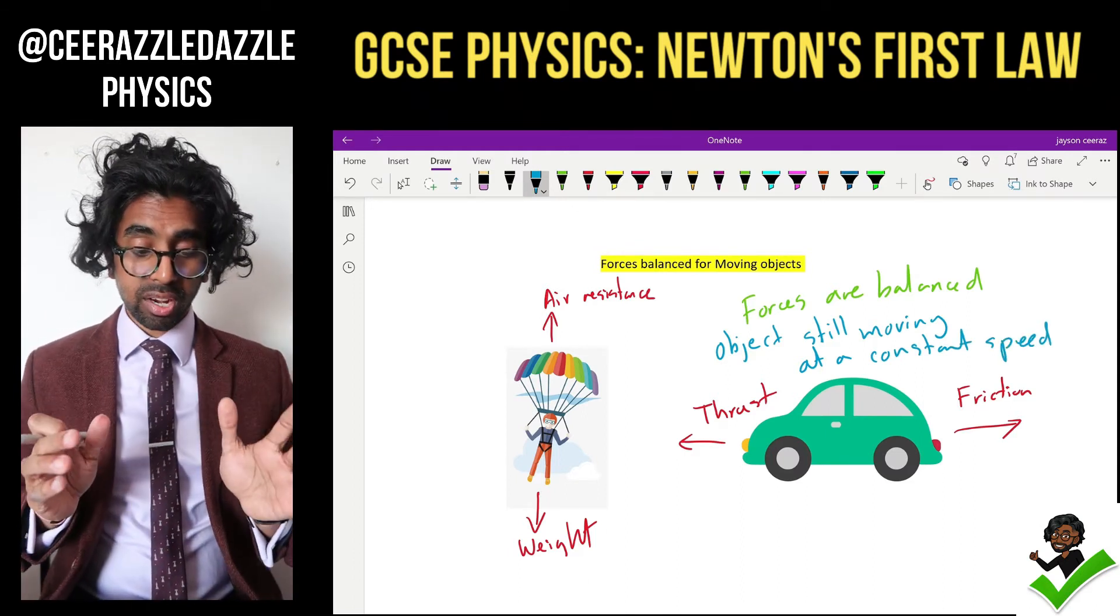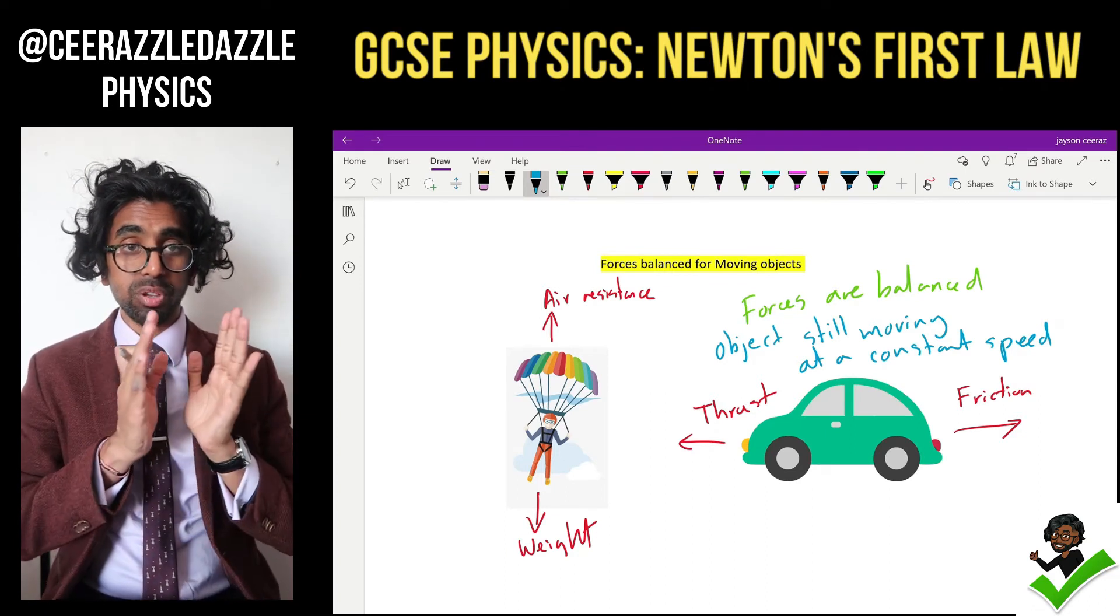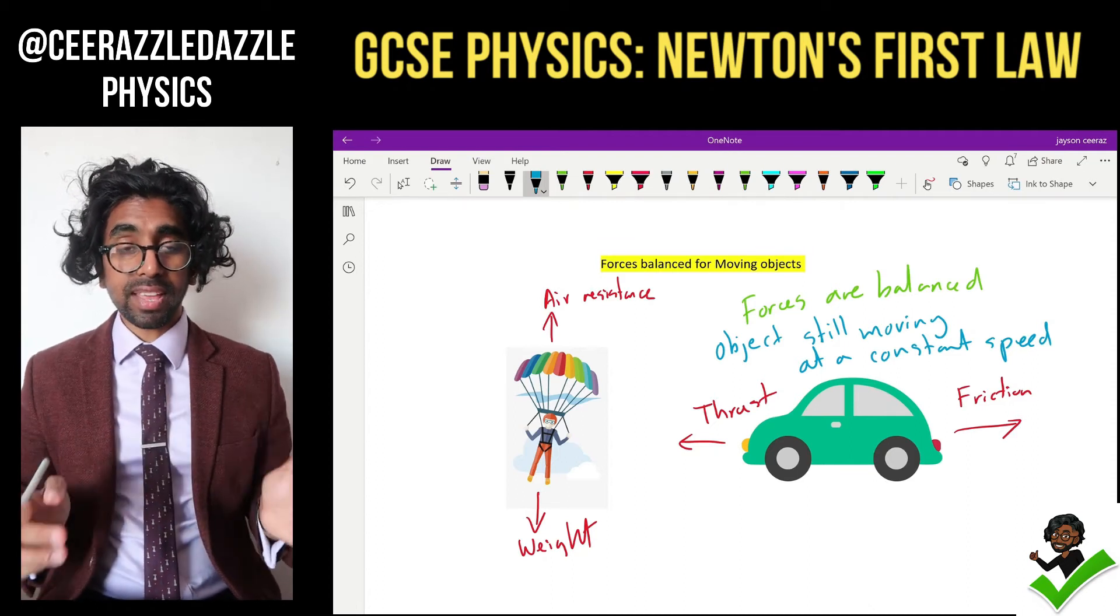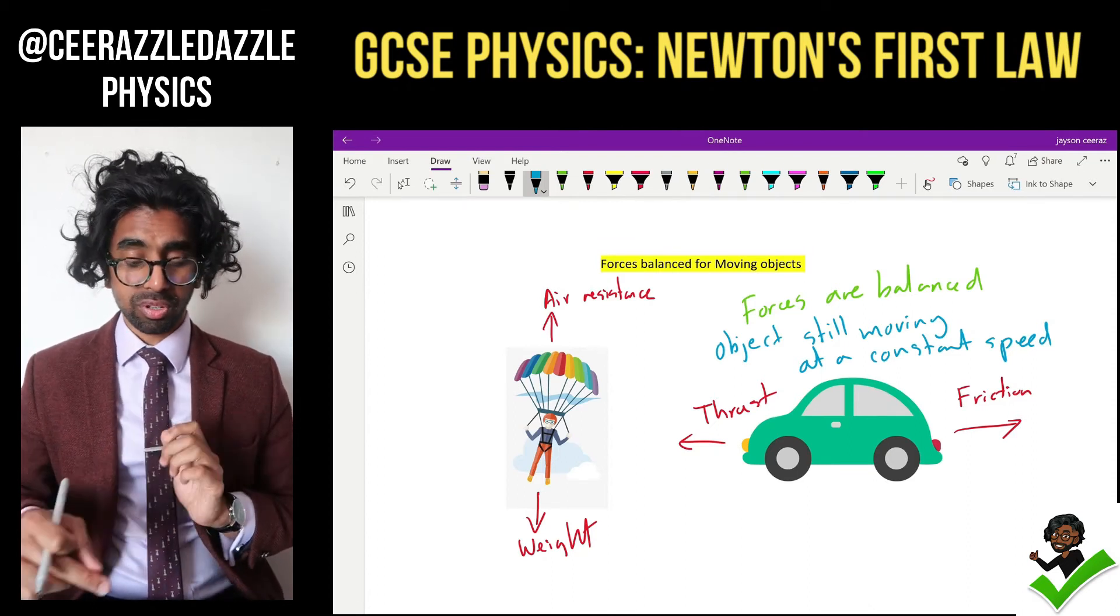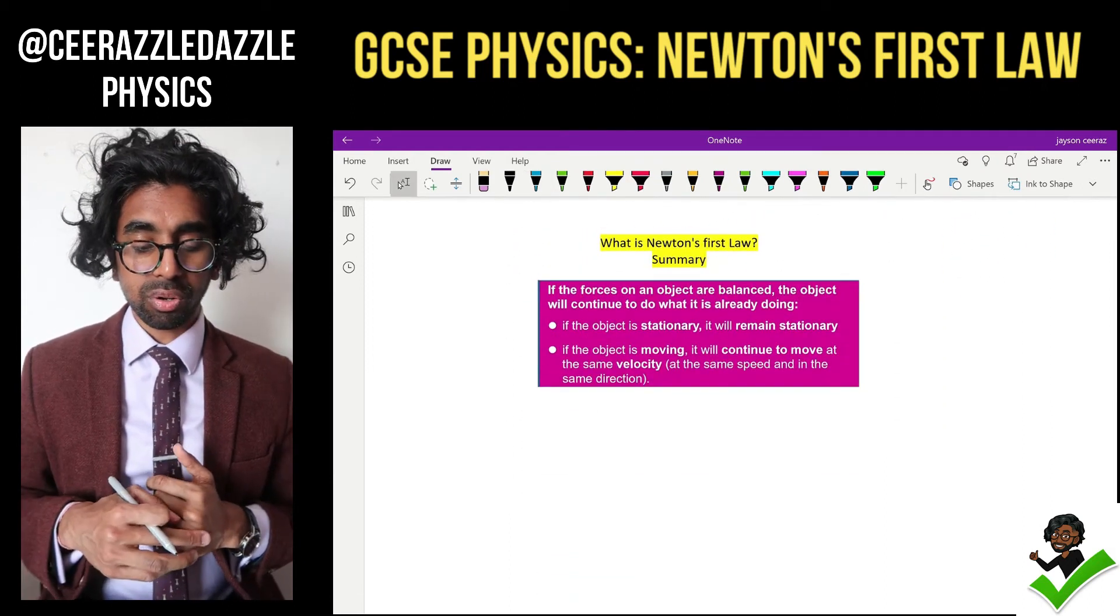So to summarize, make sure we've got our head around this. When the forces are balanced, either the object will not move at all or it will move at a constant speed, and that is Newton's first law of motion. So we'll scroll down for a quick summary. What is Newton's first law?